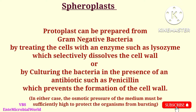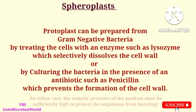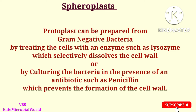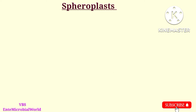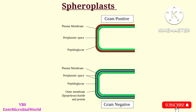Spiroplasts can be prepared from gram-negative bacteria by treating the cells with an enzyme such as lysozyme, which selectively dissolves the cell wall, or by culturing the bacteria in the presence of an antibiotic such as penicillin, which prevents the formation of the cell wall.